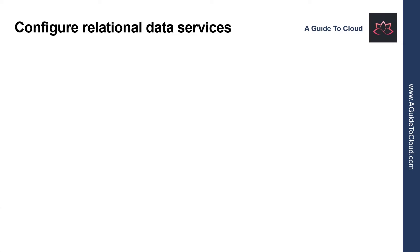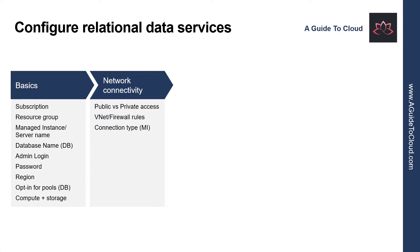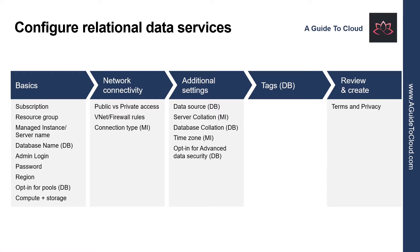Let us understand what you need to configure relational data services in Azure. First, let's look at the basics. You need an active Azure subscription. Then you create a resource group, then create a managed instance or a database based on the server name you give, provide the admin login and password, select the right region, and select the compute and storage. Next is Network Connectivity, where you configure the VNet, firewall rules, connection type, etc. There are additional settings for data source, server collation, time zone, etc. You can create tags for these resources, and the final step is to review and create. After validation, Azure will start creating these resources for you.